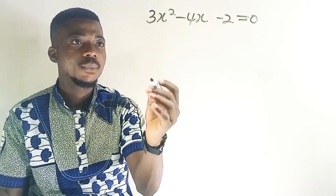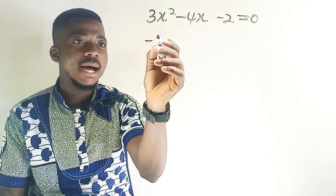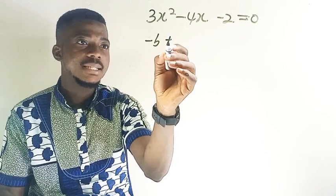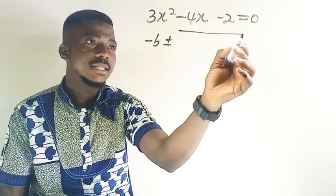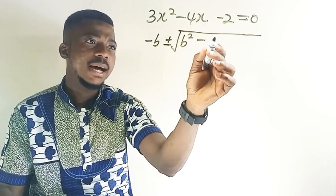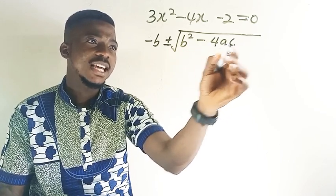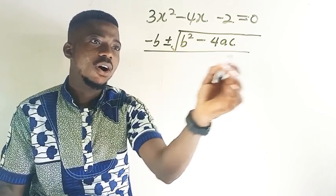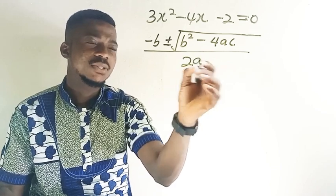Now, this is the quadratic formula. So you have minus b plus or minus the square root of b squared minus 4ac all over 2a.